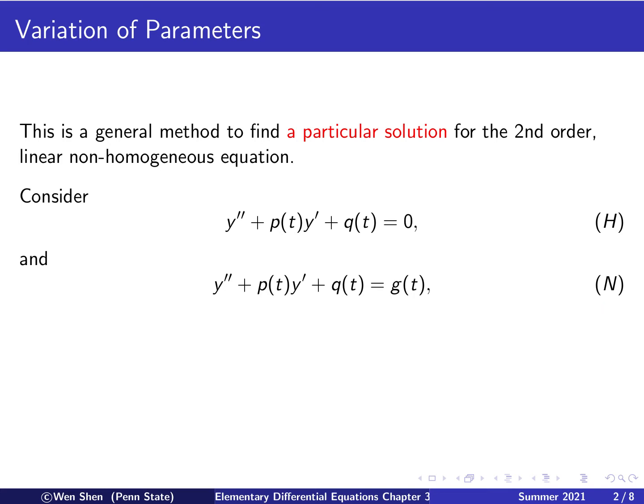In this setting, we will introduce a method to find a particular solution for the non-homogeneous equation once the solutions to the homogeneous equations are given. Before we proceed, I would like to comment on the difference in the setting of this discussion from the one we have done. The one we did first was for constant coefficients — so these p and q's are constant, no longer functions of t — and here it's more general.